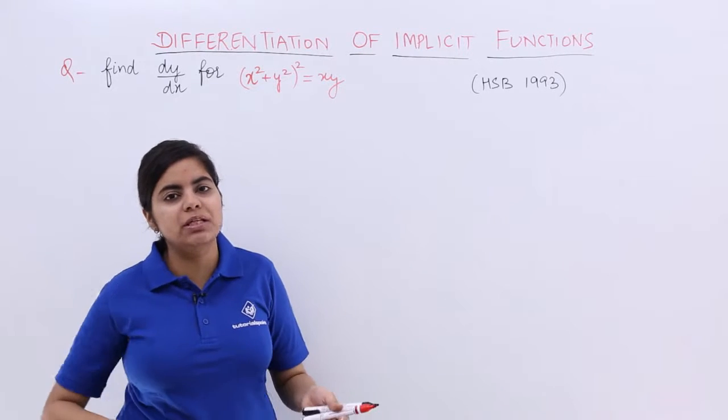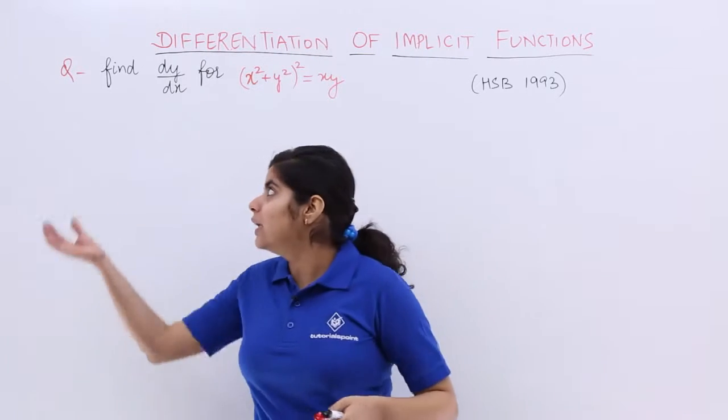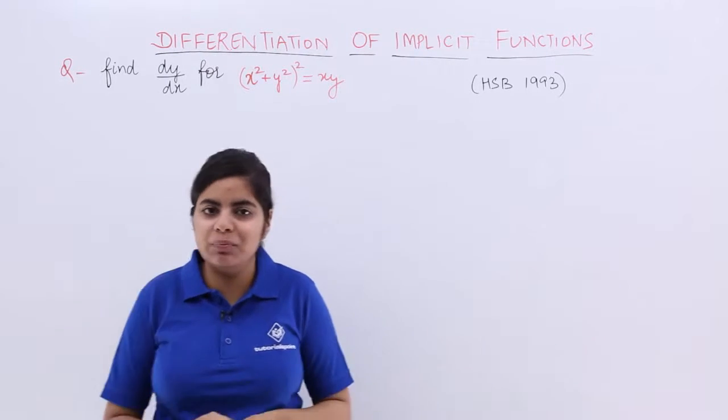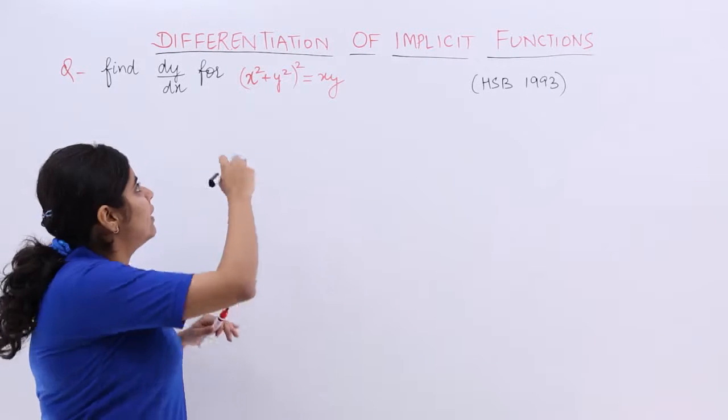Basically, differentiation of implicit function talks about the differentiation directly with respect to x for dy by dx. So that is simple, we can do it in that manner and then later separate the terms. So let me write the heading solution.